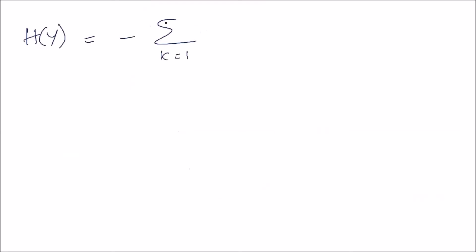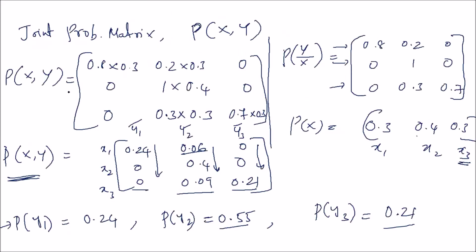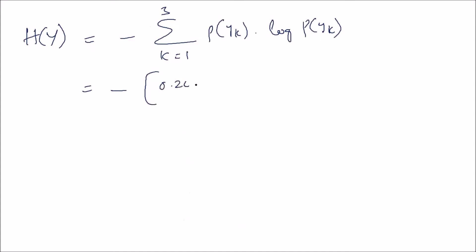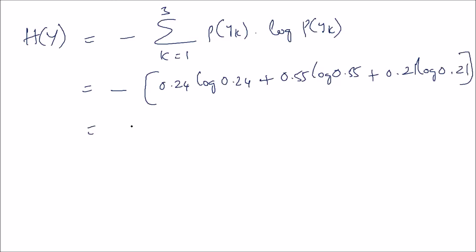For H(Y), the entropy of the output: H(Y) = -summation over k=1,2,3 of P(yk) log P(yk), where P(y1)=0.24, P(y2)=0.55, P(y3)=0.21. Substituting: H(Y) = -[0.24 log 0.24 + 0.55 log 0.55 + 0.21 log 0.21]. Taking log base 2, we get H(Y) = 1.441 bits per message.